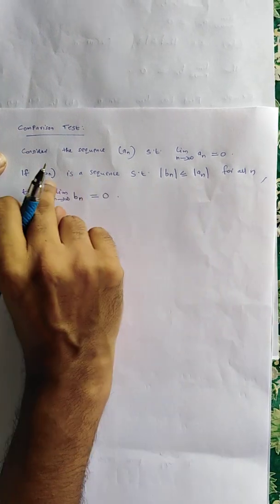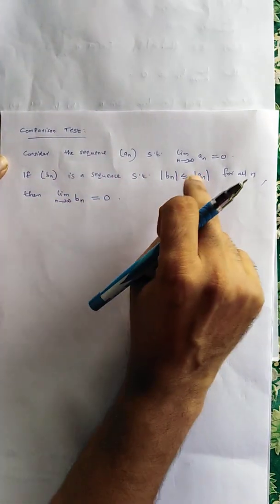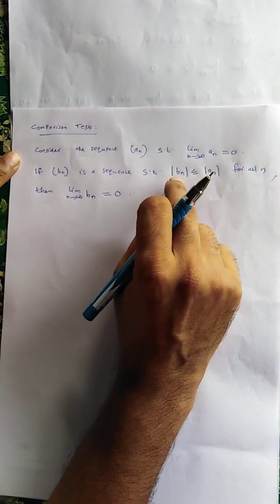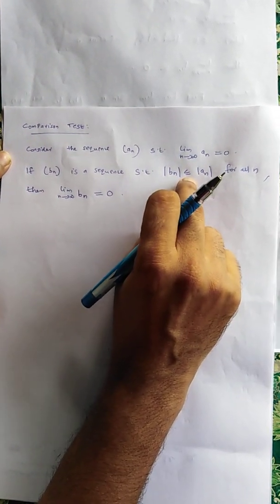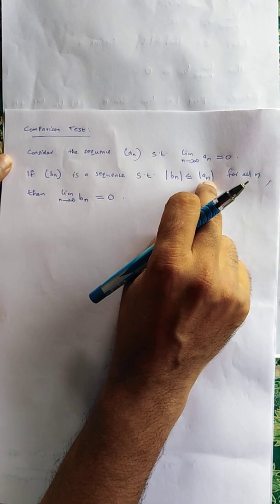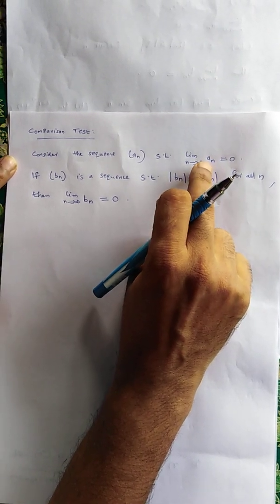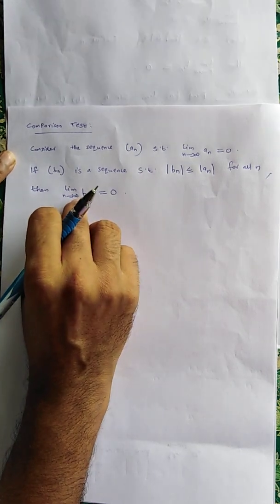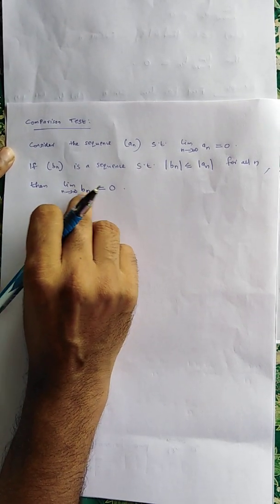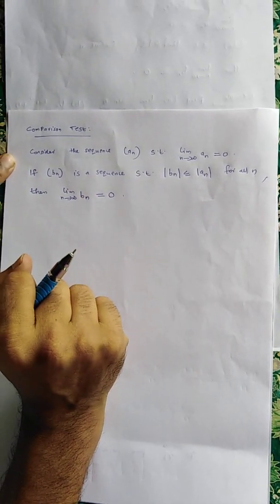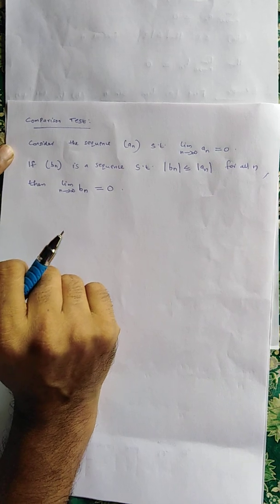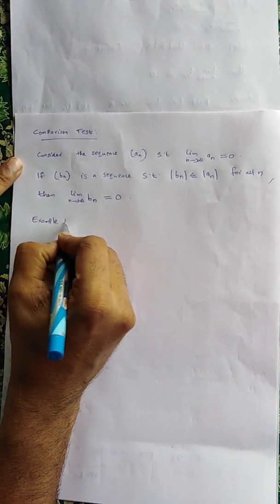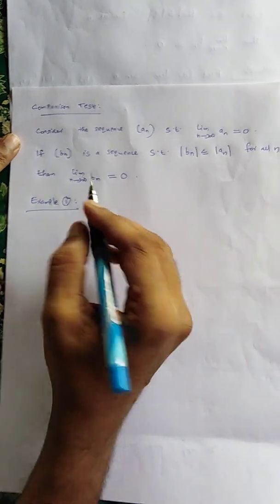This test is called the comparison test because we are comparing the sequence b_n with the sequence a_n. All elements of b_n are less than or equal to all elements of a_n, and since lim(n→∞) a_n = 0, we conclude lim(n→∞) b_n = 0. This is the essence of the comparison test.